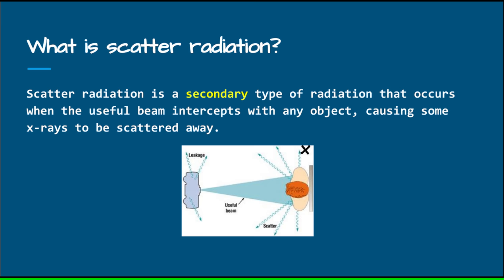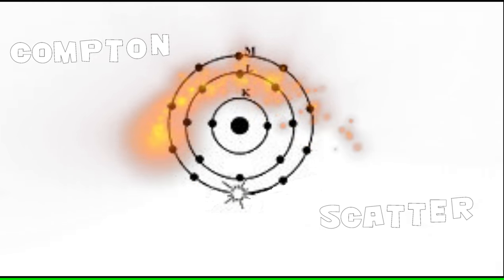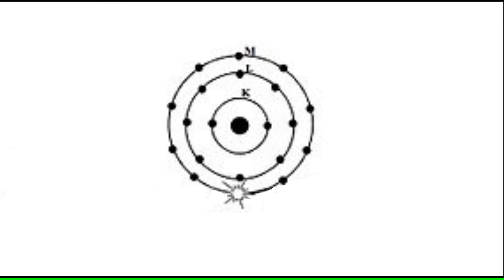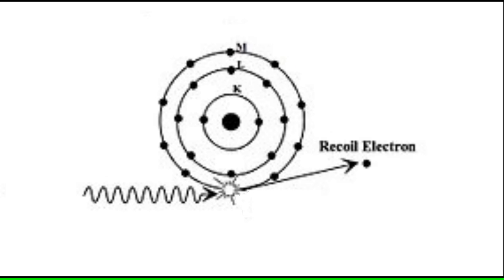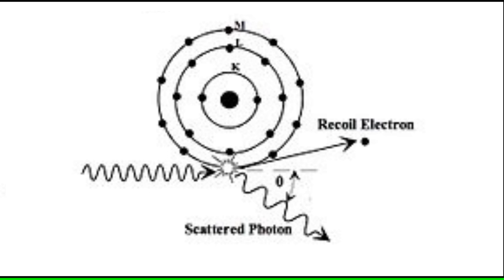What is scatter radiation? Scatter radiation is a secondary type of radiation that occurs when the useful beam intercepts with any object, causing some x-rays to be scattered away. Compton scattering occurs between moderate energy x-rays and outer shell electrons. It results in ionization of the target atom, a change in x-ray direction, and a reduction in x-ray energy. The wavelength of the scattered x-ray is greater than that of the incident x-ray, with less energy.